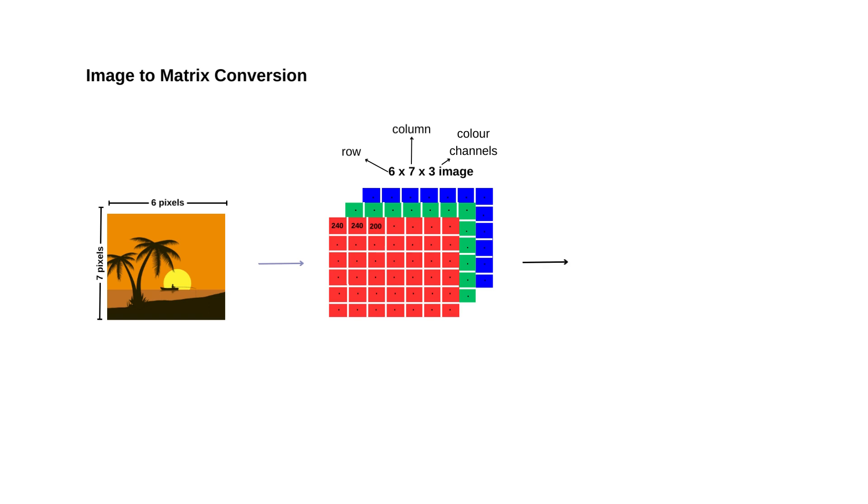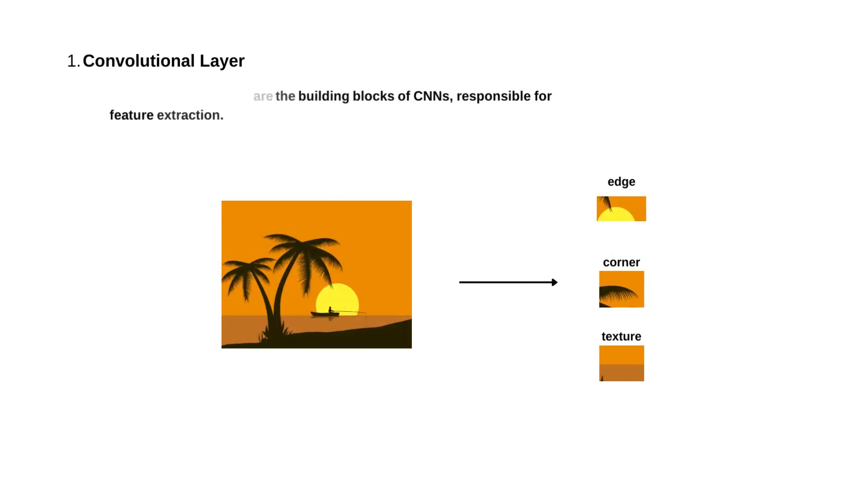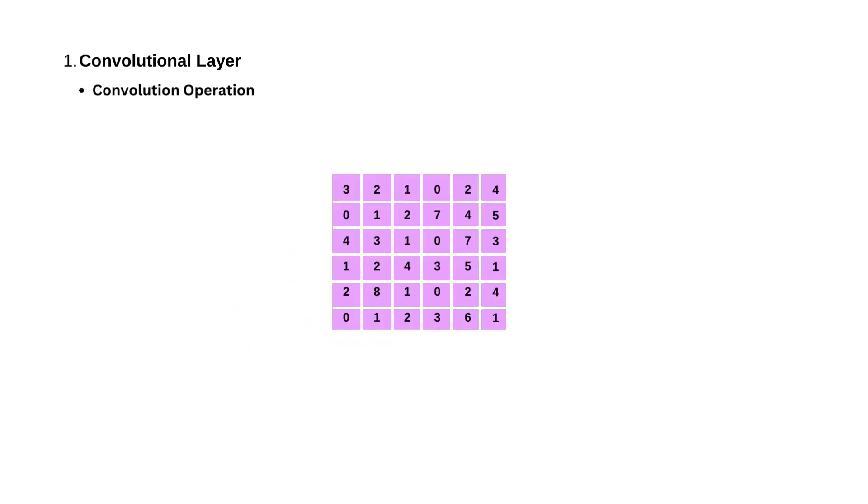CNNs are composed of three fundamental types of layers. Convolutional layers are the building blocks of CNNs responsible for feature extraction. They help the network see certain features like edges, corners or textures in the image. They apply a set of filters or kernels to the input data. For simplicity, consider this pixel matrix on which we will apply our operations.